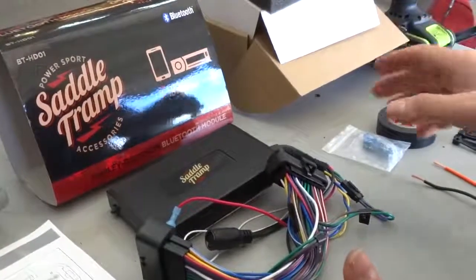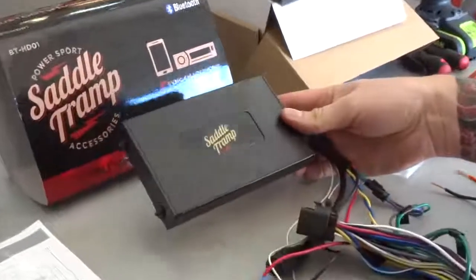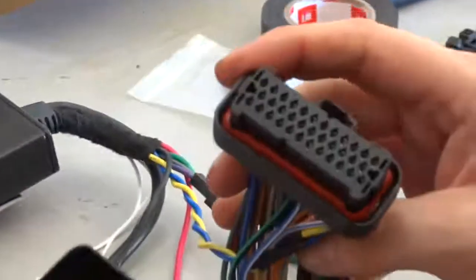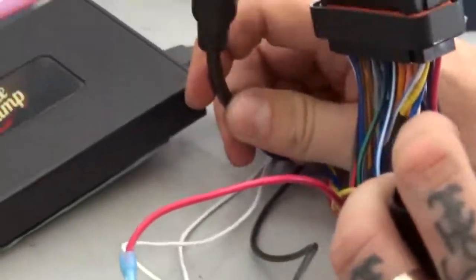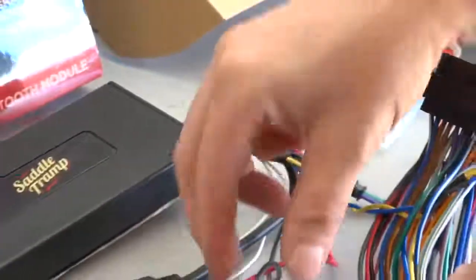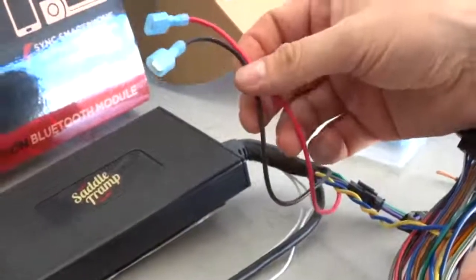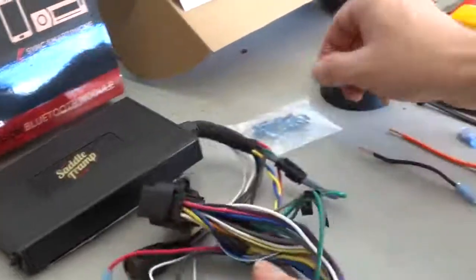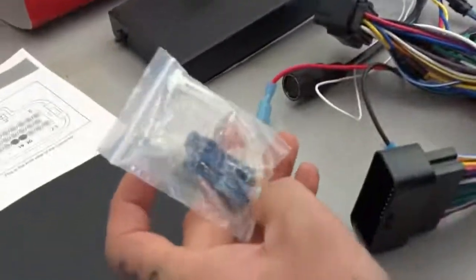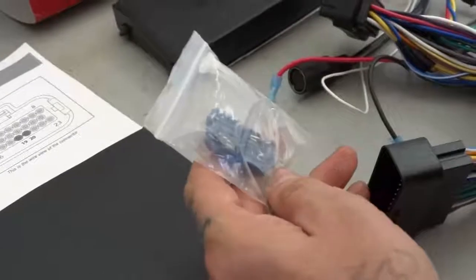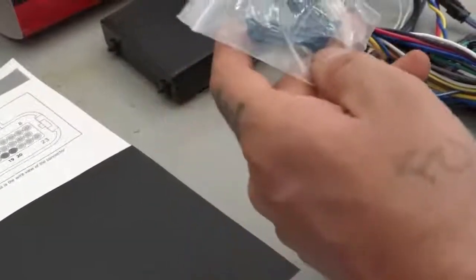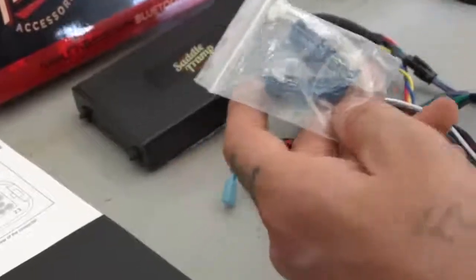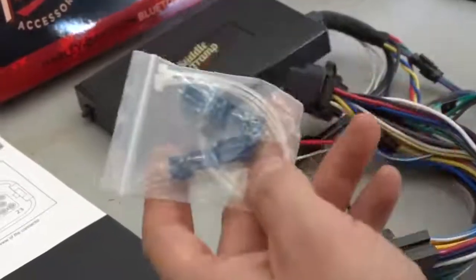What comes in the kit is the actual interface here. As you can see, it's got the plug-and-play plugs right here, a USB output plug, and the power and ground wires. It does come with quick taps. We suggest you don't use these. If you trust them and feel like you can use them, by all means it makes your installation quicker, but may not be as effective.